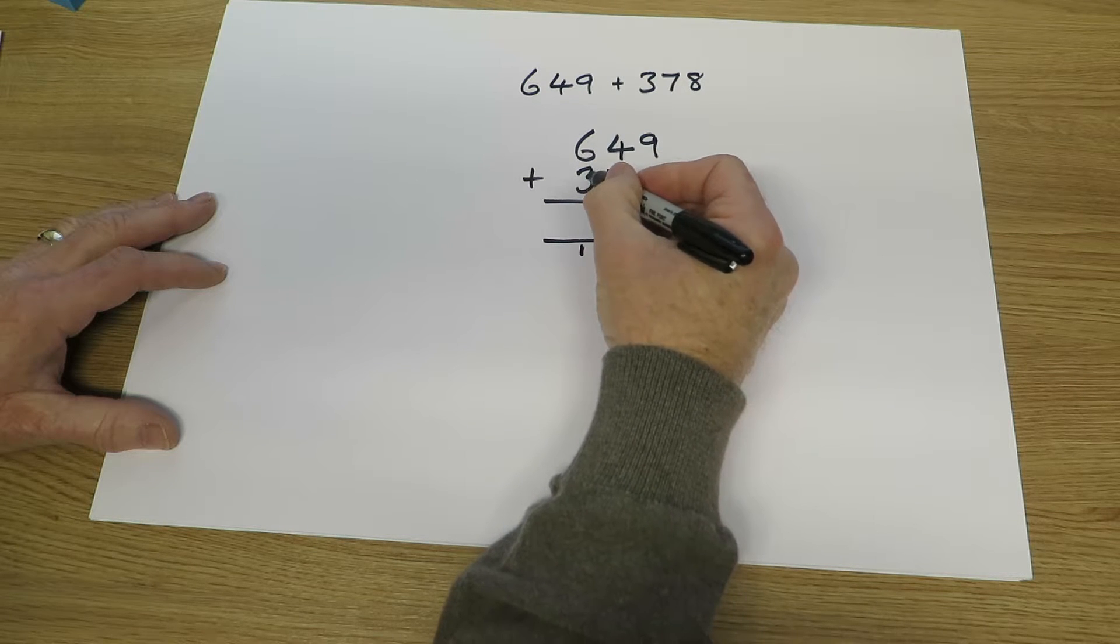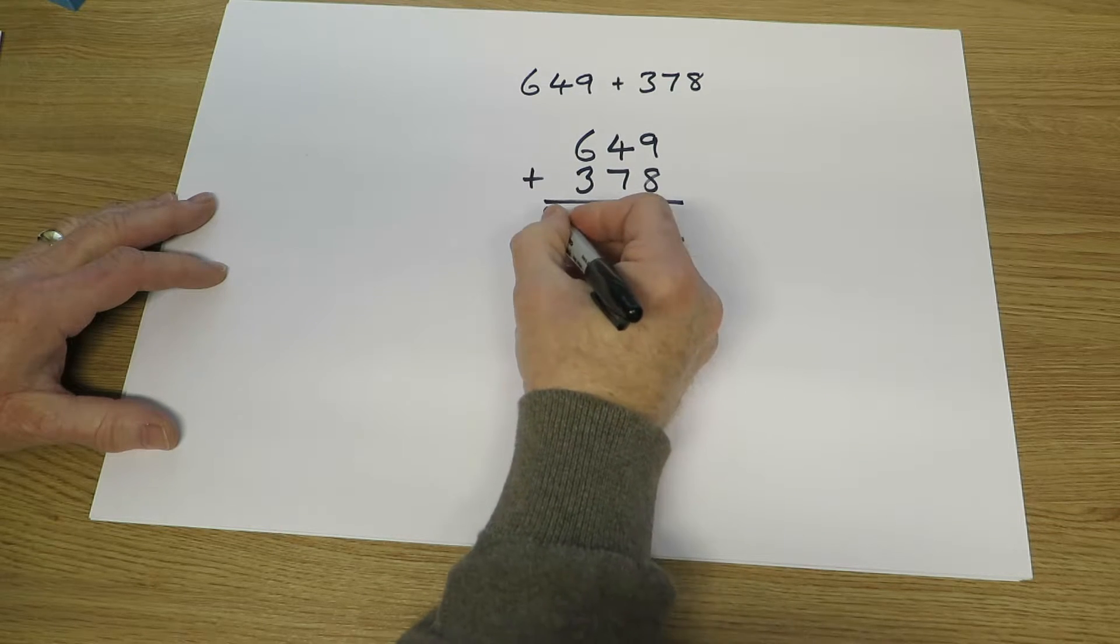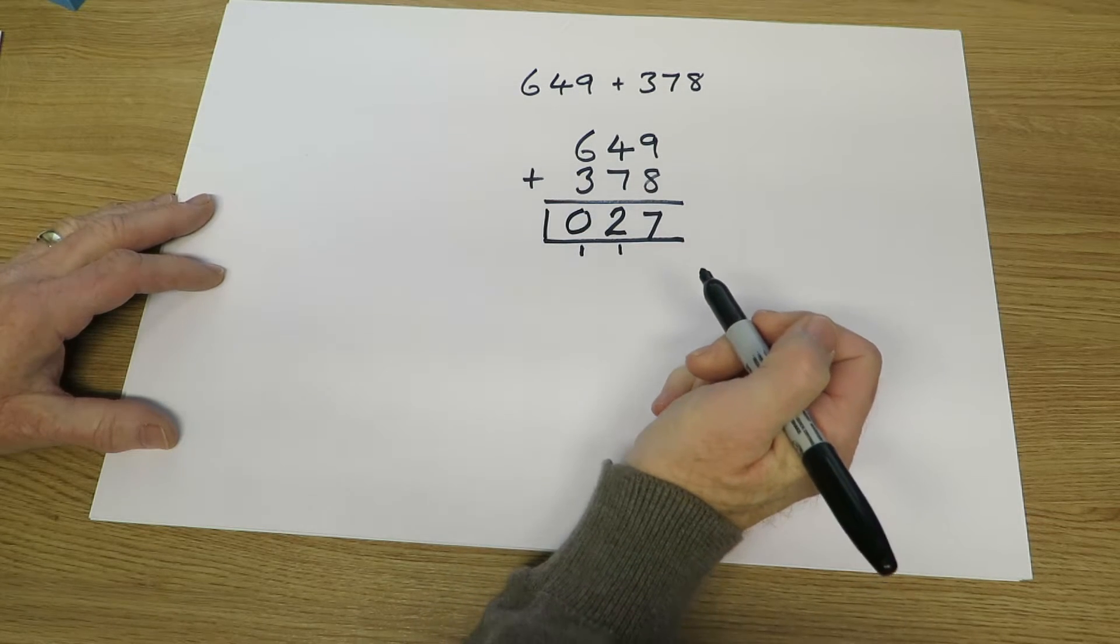6 hundreds, add 300 is 900. One more hundred gives us 10 hundreds so obviously we've got a thousand. So 1027.